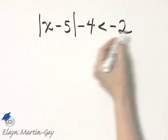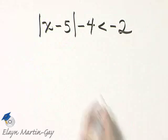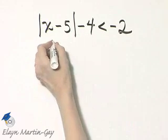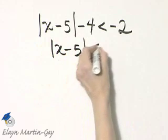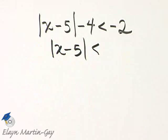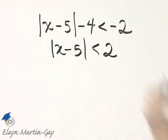Let's add 4 to both sides of this inequality. If I add 4 to the left side, I just have the absolute value of x minus 5. If I add 4 to the right side, I have negative 2 plus 4 or 2.